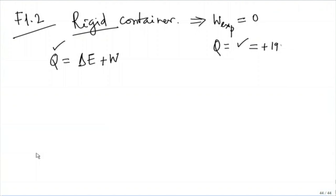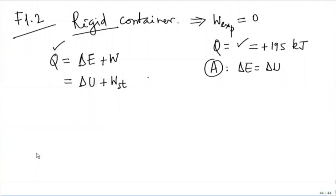This equals plus 195 kilojoules. We assume delta E equals delta U - that has to be an assumption. Since W expansion is 0, the only other component which seems to be present is the stirrer work while it is stirred. This becomes delta U plus W stirrer, since W expansion is 0. An assumption is W equals W expansion plus W stirrer; W expansion is 0 because it is a rigid container and there is no hint of a third or fourth component of work.